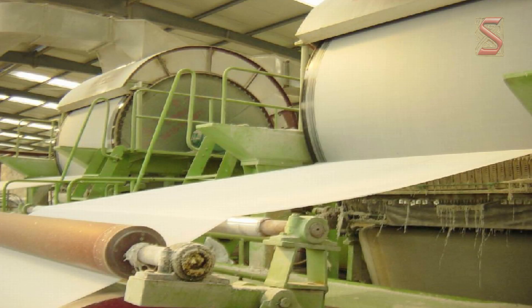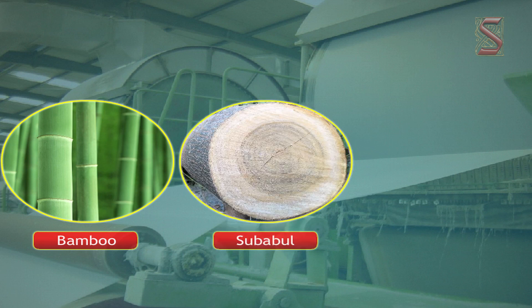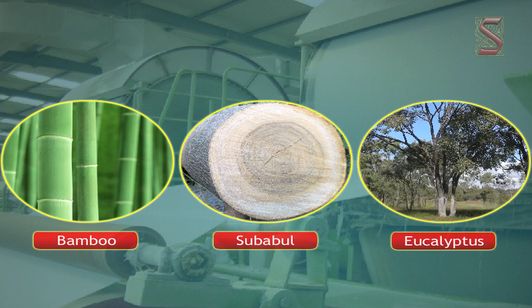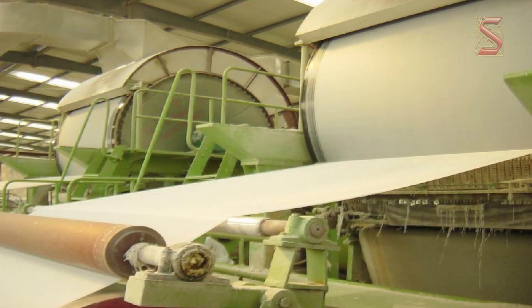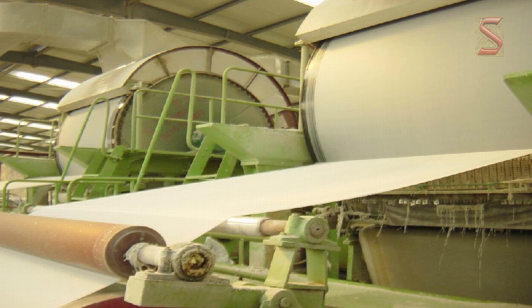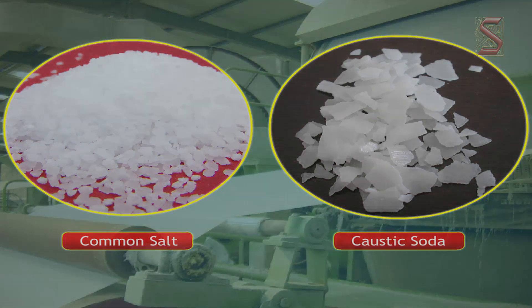When it comes to the supply of raw materials to paper mills, the raw materials include wood from bamboo, subabul and eucalyptus trees. The subabul is the most widely used wood in the present day. In addition to the wood, various chemicals like common salt and caustic soda are also used in the making of paper. The scrap paper is also recycled in the paper mills.